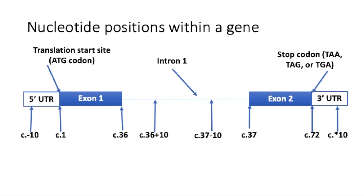The numbering of nucleotide positions within the gene is all relative to the ATG start site. The A nucleotide in the ATG translation start site in exon 1 is the first nucleotide, named C dot 1. Starting from C dot 1, nucleotides are then numbered in order until the end of the first exon. In this example, there are 36 nucleotides in exon 1, so the last nucleotide in this exon will be called C dot 36. For exon 2, the nucleotide numbering follows on from the last nucleotide in exon 1, so the first nucleotide in exon 2 is called C dot 37. In this example, exon 2 also has 36 nucleotides, including the stop codon, so the last coding nucleotide in the gene is numbered C dot 72.